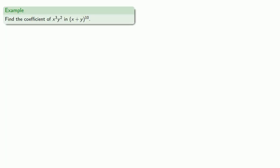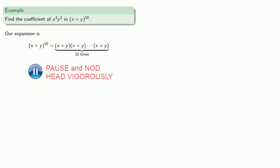For example, suppose I want to find the coefficient of x cubed y squared in the tenth power of x plus y. It's helpful to remember x plus y to the tenth is the result of multiplying x plus y by itself ten times. To get a term x cubed y squared, we have to choose x exactly three times and y exactly twice.